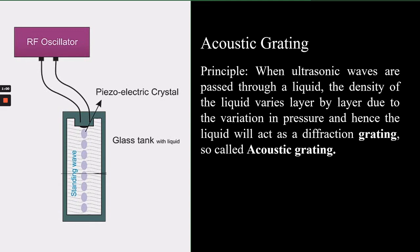So let us see what acoustic grating is. The main principle behind the generation of acoustic grating is: when ultrasonic waves are passed through a liquid, the density of the liquid varies from layer to layer due to the rarefaction and compression of the liquid — that is, due to variation in pressure. Hence the liquid will act like a diffraction grating when it is illuminated with monochromatic light in a direction perpendicular to the propagation direction of the ultrasonic waves. Hence this is called acoustic grating.